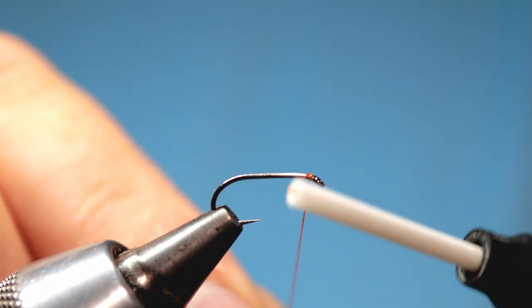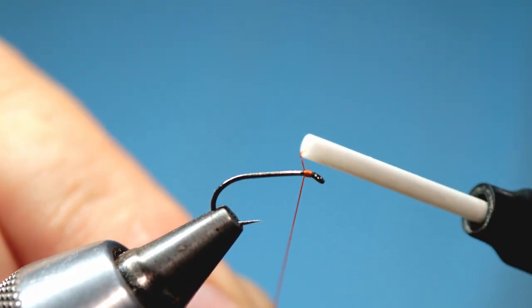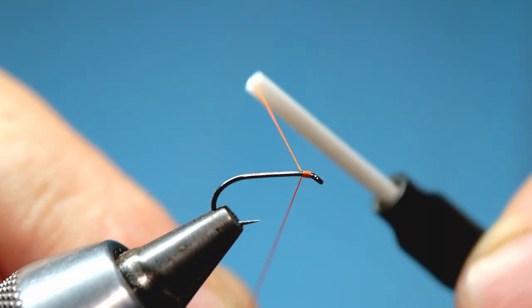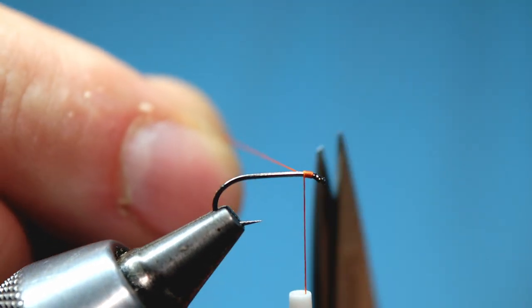We come in and simply trap our tying silk in with three or four nice tight turns before trimming off the end.